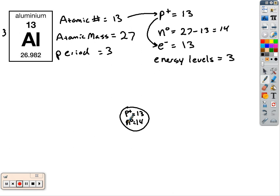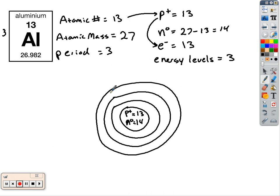Then draw in your three energy levels. That's three rings around your nucleus. Start filling them up, remembering the limits. Level number one can hold two.